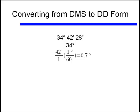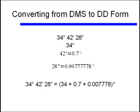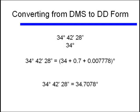We'll handle 28 seconds the exact same way. This time, however, our conversion factor will be 1 degree over 3600 seconds. And that works out to be 0.00777778 degrees. Putting this all together, we find that 34 degrees, 42 minutes, and 28 seconds equals 34.7078 degrees, rounded to the nearest 4 decimal places.